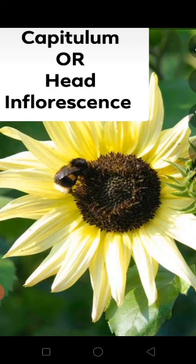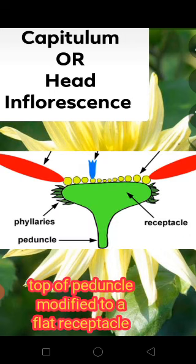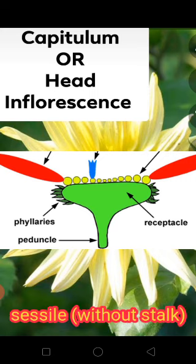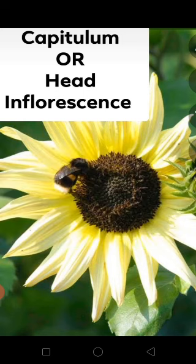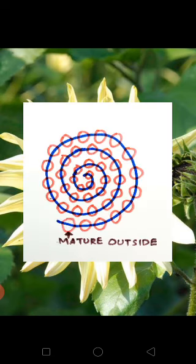In the head inflorescence, the main axis — the peduncle — is flattened into a receptacle. The flowers are arranged in a centripetal manner, meaning the younger flowers are seen towards the center, while the more mature flowers are arranged in the outer region of the inflorescence.